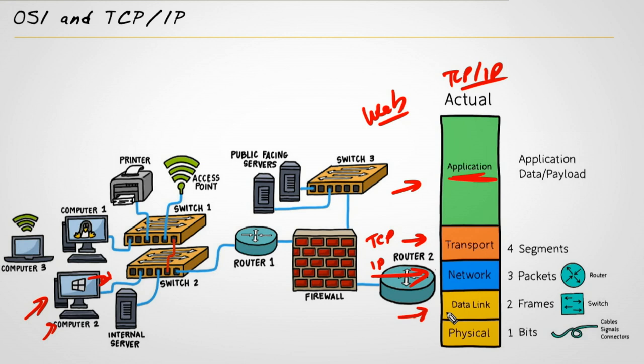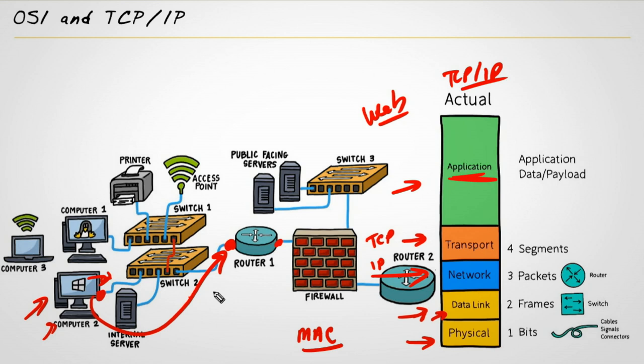Bob's computer also has to add layer two information. A layer two address on an Ethernet network is referred to as a MAC address — an address burned into every network interface card. Bob's computer has one, and Bob's default gateway router has one. At layer two, Bob's computer includes the layer two address of the router so that the switches can forward to the router. The router then sees where it needs to go and makes a layer three routing decision. Then the bits are sent out on the network — which is the physical layer: physical connections and physical signals as the message is sent to the switch.